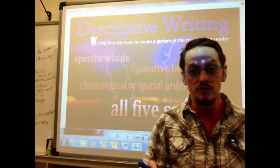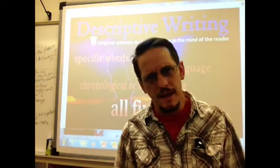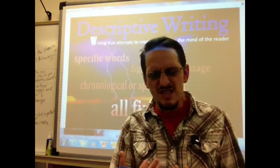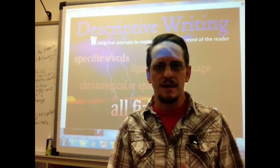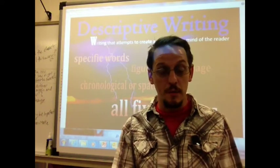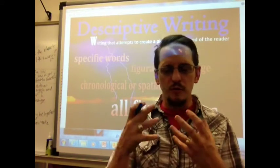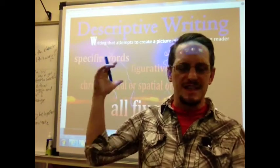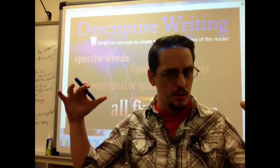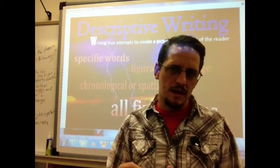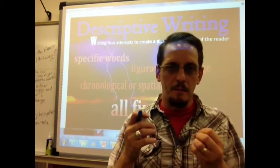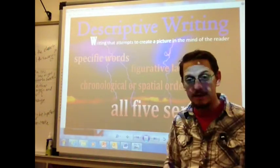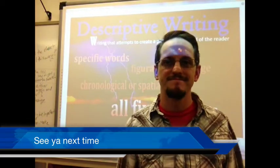We also want to use all five senses, as long as it makes sense. You want to use senses of smell, touch, taste, and hearing. As we've described our storm in class, we've described how the rain smelled and how the hail sounded like a hail of bullets as it hit our windows. That all begins to create a picture in the mind of the reader, and that is what descriptive writing is all about.